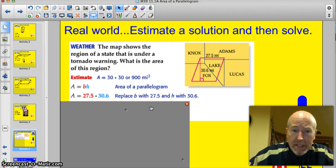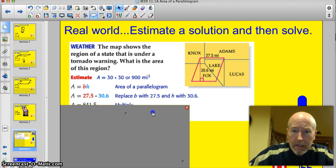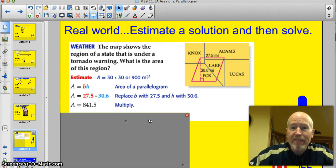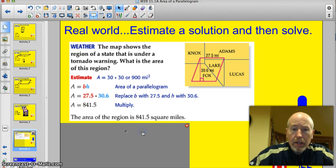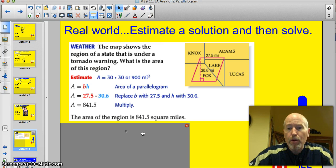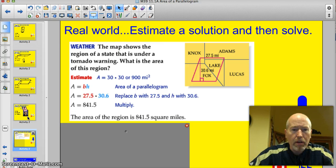Now we've got to go 27.5. Get that exact measurement. Times 30.6. Multiply it out. 841.5 if you did your math correct. And you remember to move your decimals. All right. Very good. Don't forget. We have to add the label. The region is 841.5 square miles. Kind of a tough one. But it just shows you how these things are used in the real world.